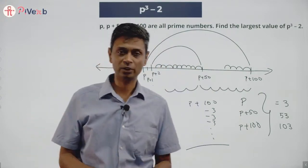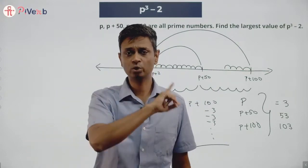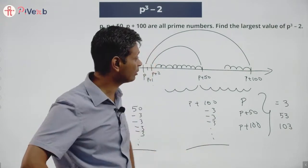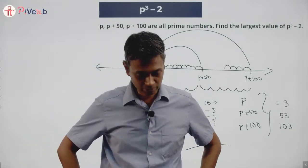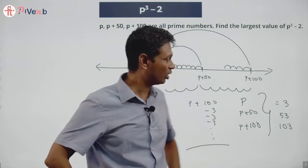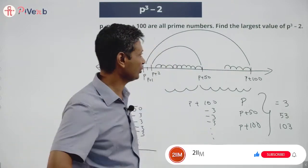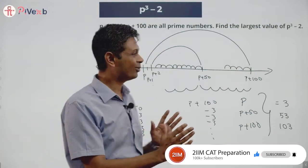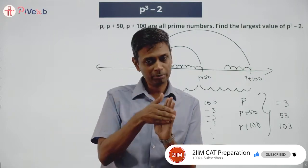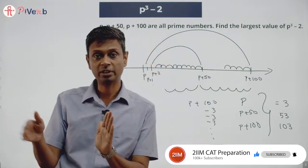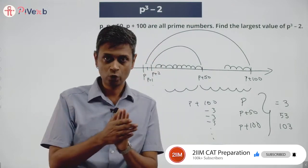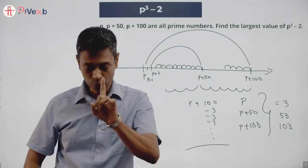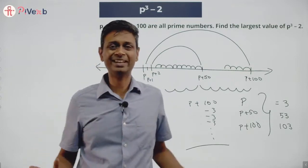It is not just the largest value — that is the only value possible. p equal to 3 is the only solution. Proving and establishing that is the tricky part. If you know modular arithmetic, this becomes more tractable, but I want to think in terms of going in steps of 3: p, p plus 1, p plus 2. p plus 1, if I keep adding 3, I will hit p plus 100. p plus 2, if I keep adding 3, I will hit p plus 50. So p, p plus 50, p plus 100 behave like p, p plus 1, p plus 2 with respect to divisibility by 3. One of those three has to be a multiple of 3. That is the takeaway — that is all we need.